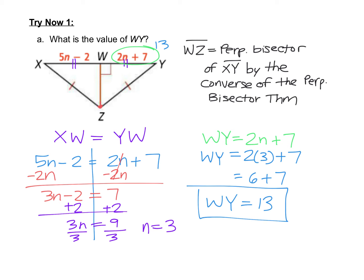To double-check: the other side, XW, should also be 13. Using 5N minus 2 with N equals 3: 5 times 3 equals 15, and 15 minus 2 equals 13. Both halves are 13. If asked for the full length of XY, that would be 13 plus 13 equals 26. You might see that type of question on your homework.